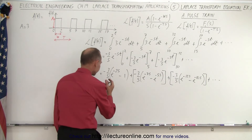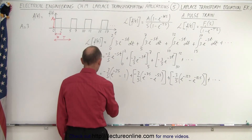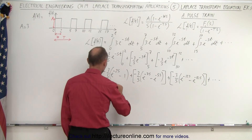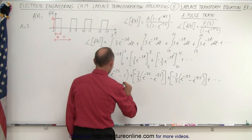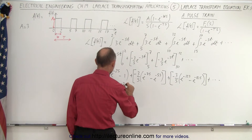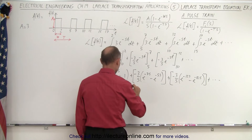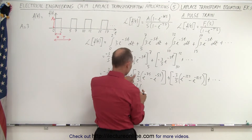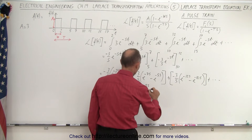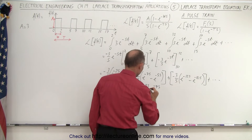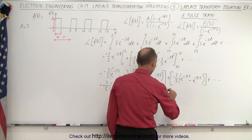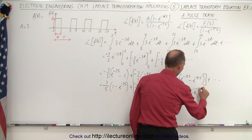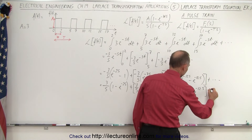Now we clean this up a little bit. Reversing the order and removing the negatives, this becomes: 3 over s times (1 minus e to the minus 2s), plus 3 over s times (e to the minus 5s minus e to the minus 7s), plus 3 over s times (e to the minus 10s minus e to the minus 12s), and so forth.